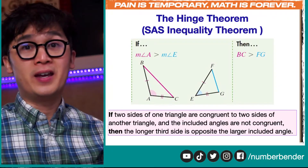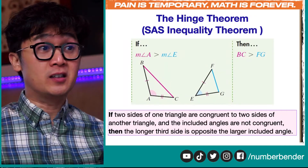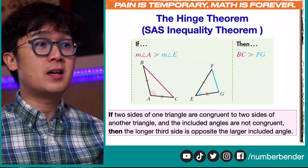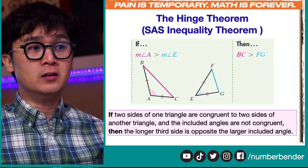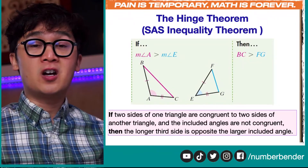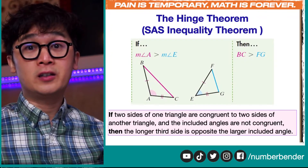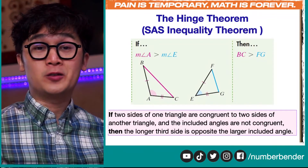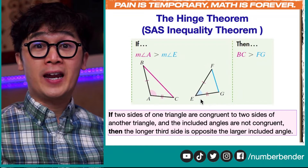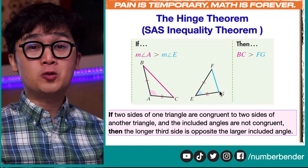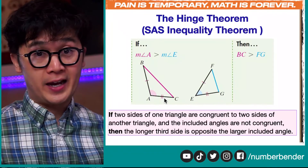So first, let's define what the Hinge Theorem is. It's also known as the SAS, or Side Angle Side Inequality Theorem, where it states that if two sides of one triangle are congruent to two sides of another triangle, and the included angles are not congruent, then the longer third side is opposite the larger included angle. It simply states that whichever holds the bigger angle between the two triangles, it will also hold the longer side.